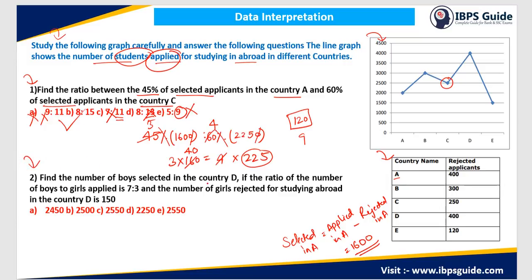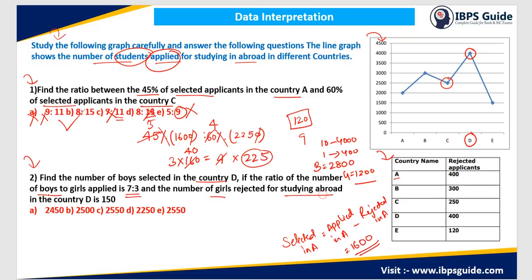Question 2: Find the number of boys selected in country D, if the ratio of boys to girls who applied is 7:3. In country D, total applied is 4000. Out of 4000, seven parts are boys and three parts are girls, so 10 parts equals 4000, meaning one part equals 400. Therefore, boys applied equals 2800 and girls equals 1200. The number of girls rejected in country D is 150. Total rejected in D is 400, so boys rejected equals 400 minus 150 equals 250.